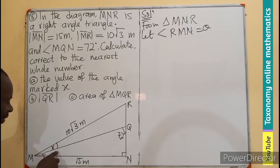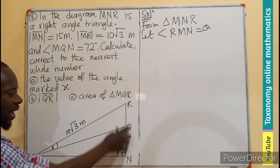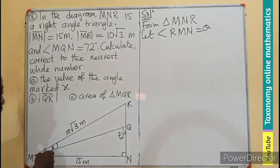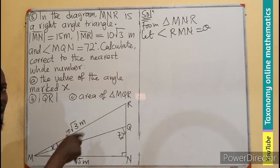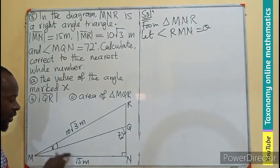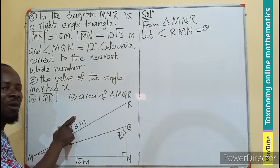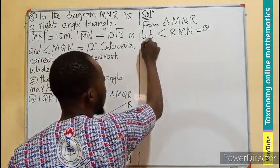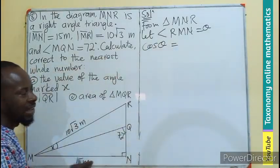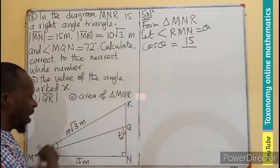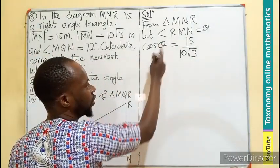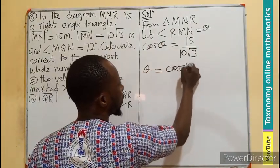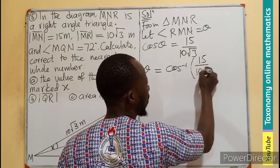The angle theta represents both X and the small angle here combined. Since this is a right angle triangle, NR becomes the opposite of angle theta, the 15 meters becomes the adjacent, and 10 root 3 becomes the hypotenuse. We use the cosine ratio, which combines the adjacent and hypotenuse. So cos(theta) equals 15 over 10 root 3, giving us theta equals 30 degrees.